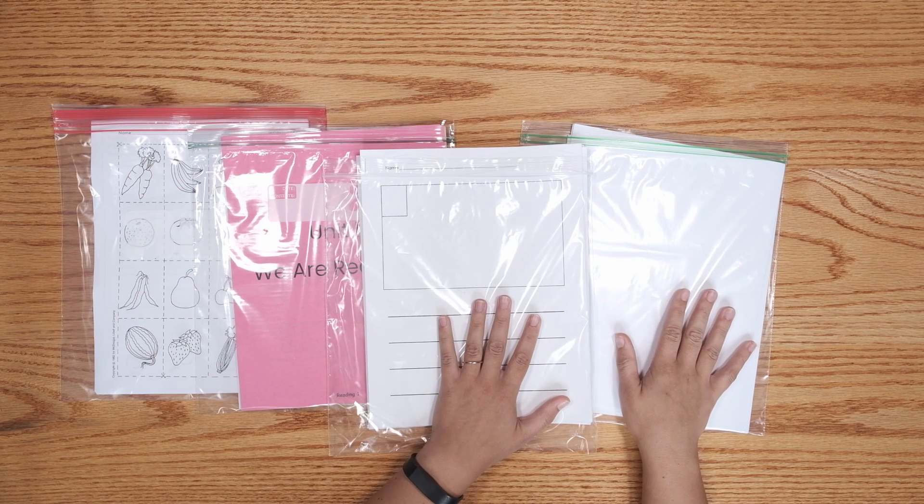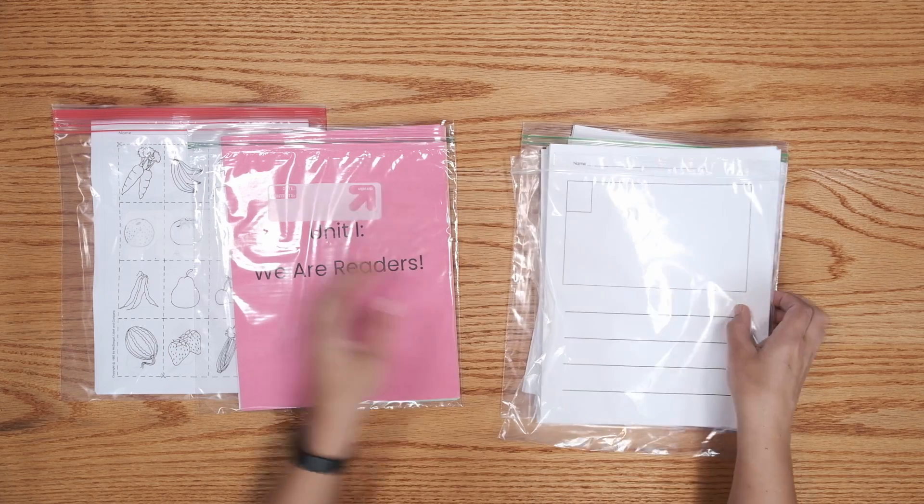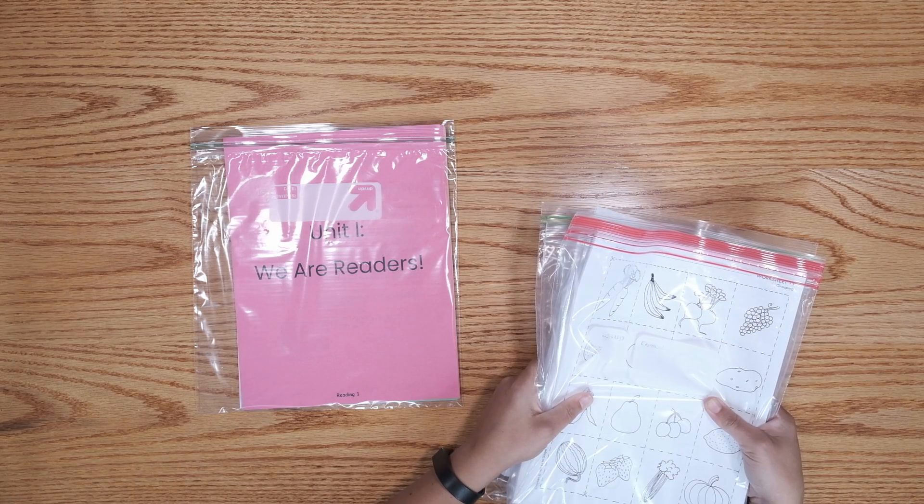These two bags are papers that we'll use for writing and drawing. These ones are all blank and these ones are all lined. We can set all three of those aside in a safe place. That safe place could even be that cardboard box you got.